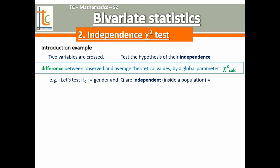Let's take an example and follow it from the beginning to the end of the test. Your first hypothesis of independence is named H0 — it's denoted H0 and it's called the null hypothesis. It's your basic hypothesis, and it will always be a hypothesis of independence. So let's think about gender and IQ. Our question is: in a population, do males and females have the same distribution of IQs? Your first hypothesis is that gender and IQ are independent, meaning that men and women share the same distribution of IQs.